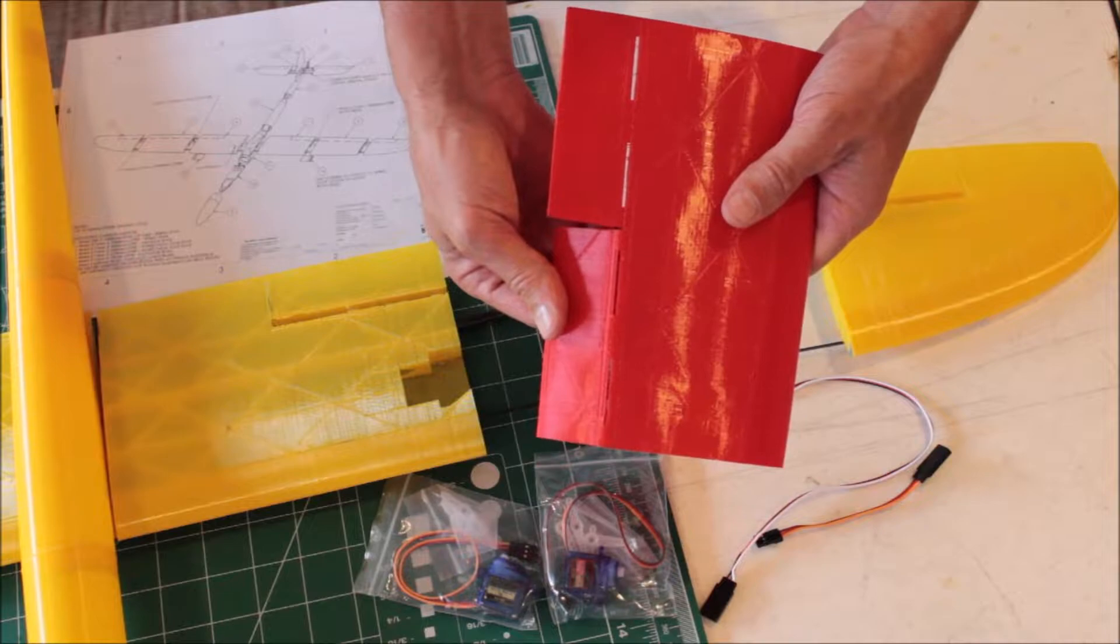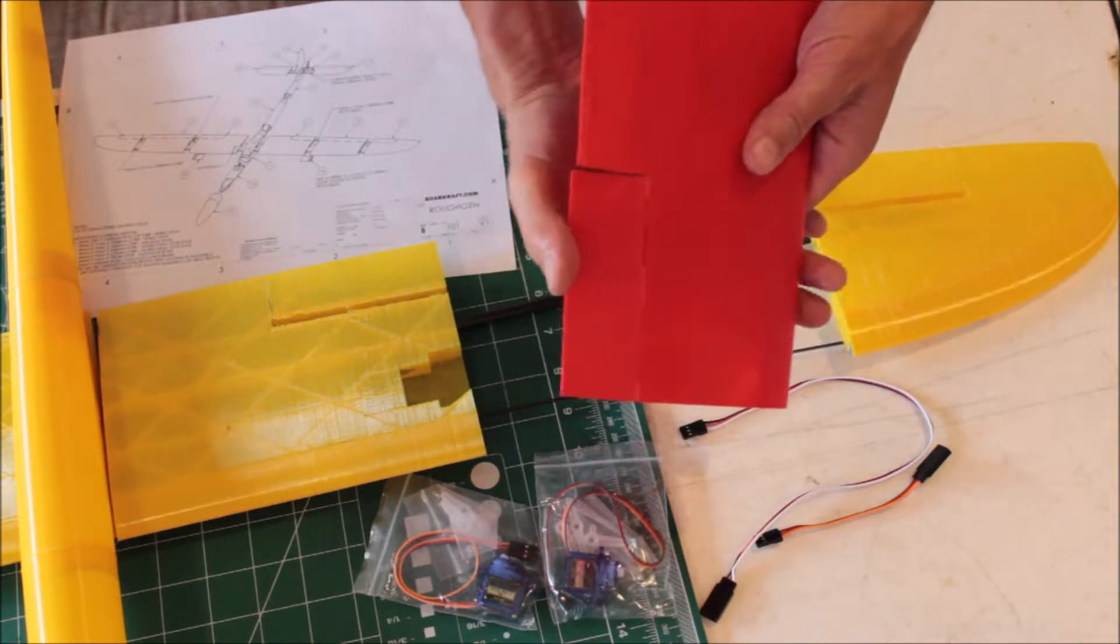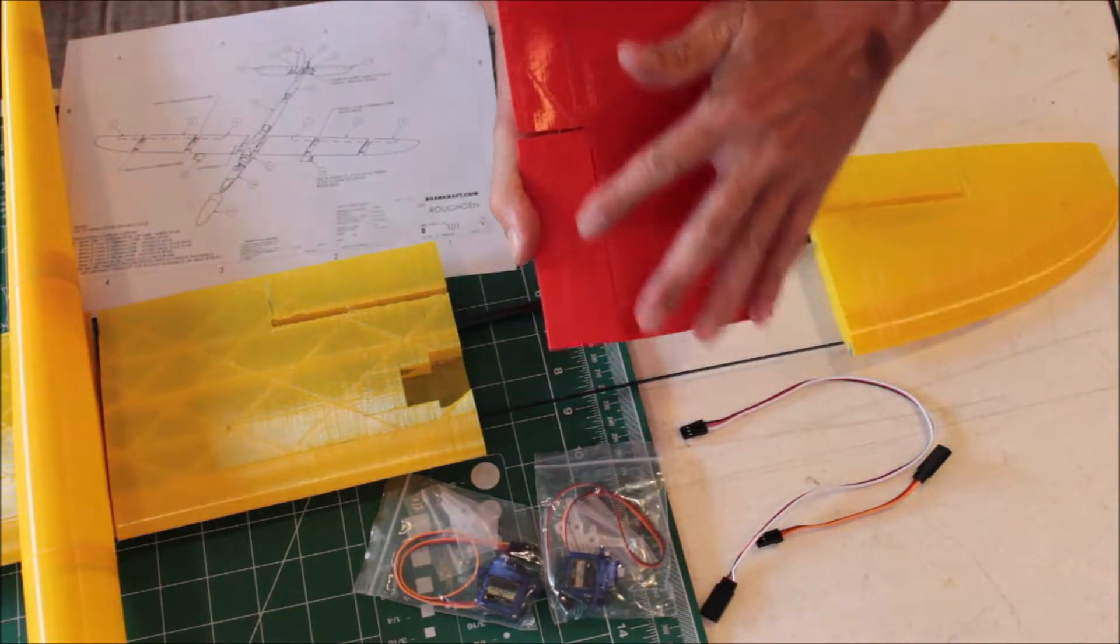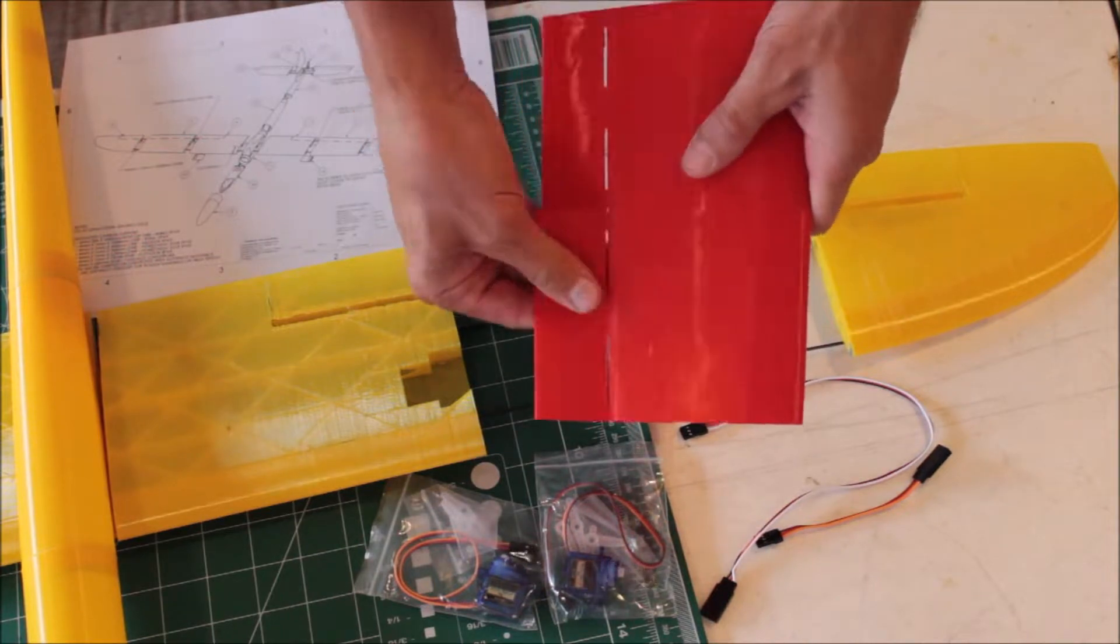Bend it down, score the top with a flat file, bend it up, and then you just work it back and forth.